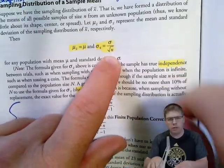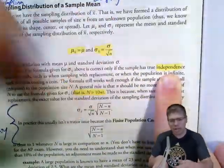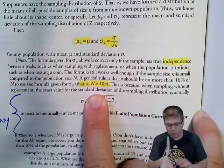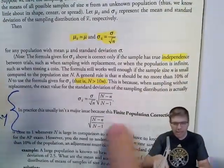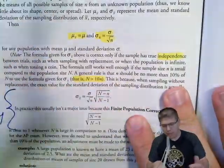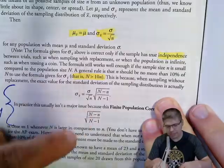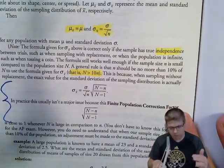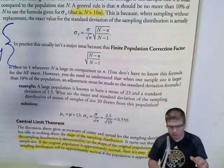Technically, sampling without replacement means observations aren't perfectly independent, since the population changes as individuals are removed. However, this is negligible as long as the population is at least 10 times the sample size — which is almost always the case. There's also a finite population correction factor you can apply when that condition isn't met, but you don't need to worry about that formula.